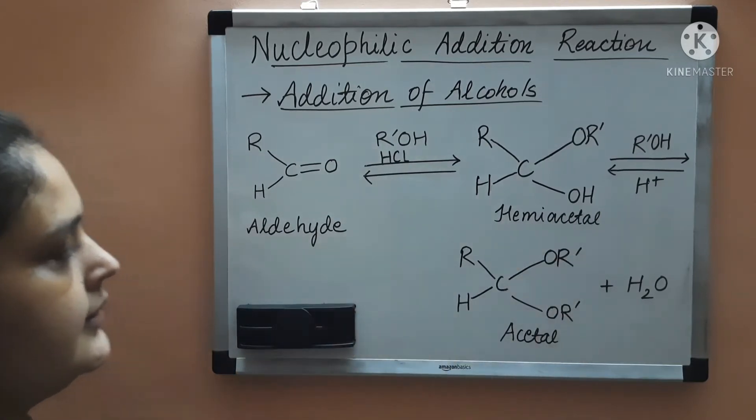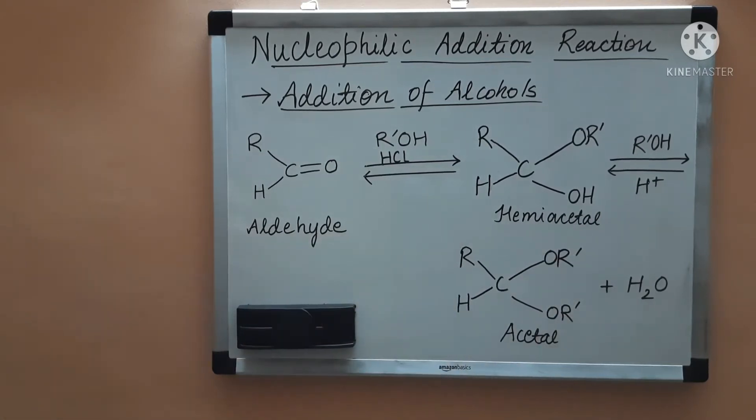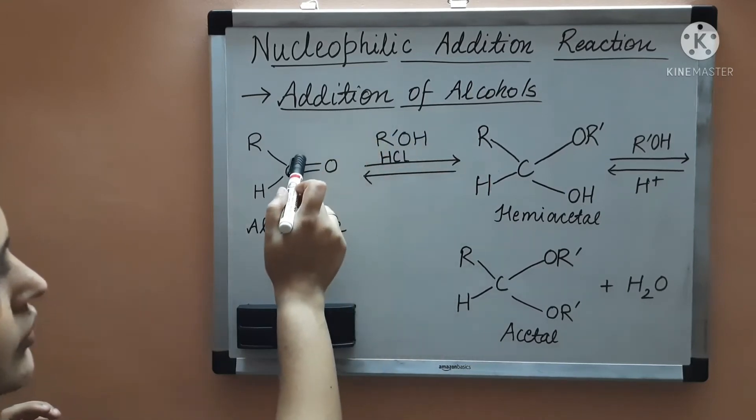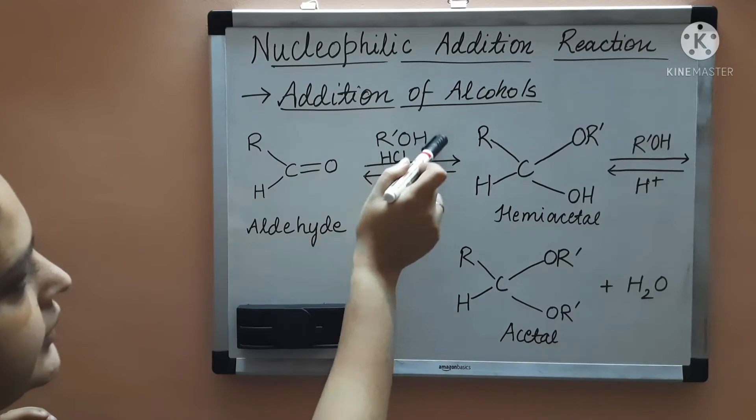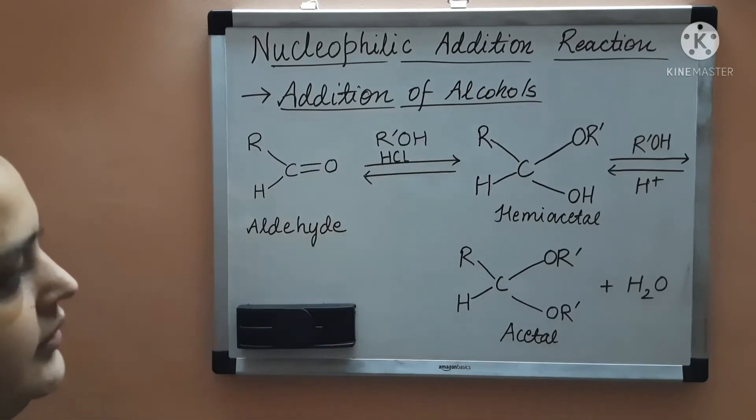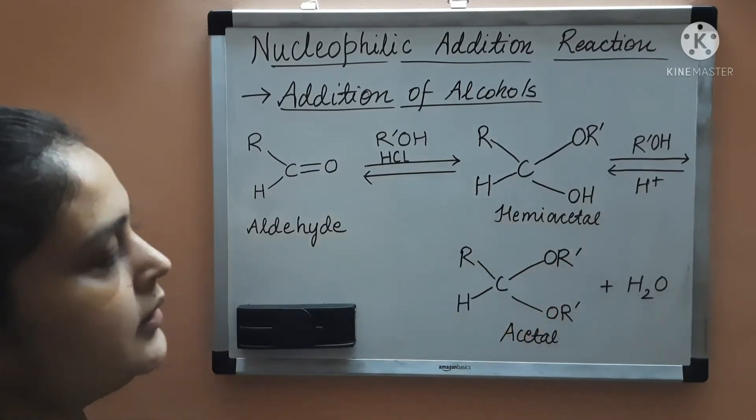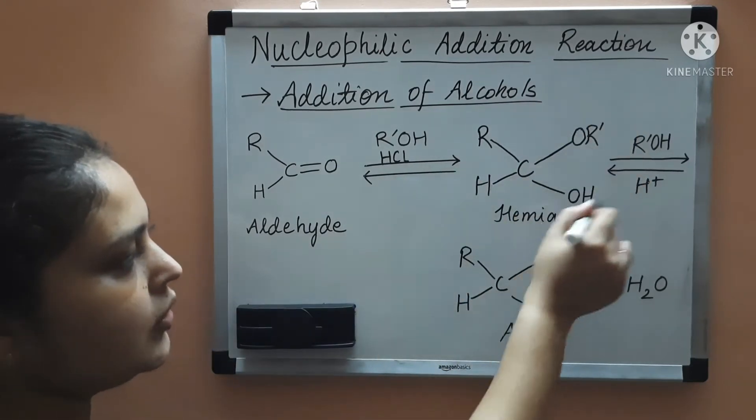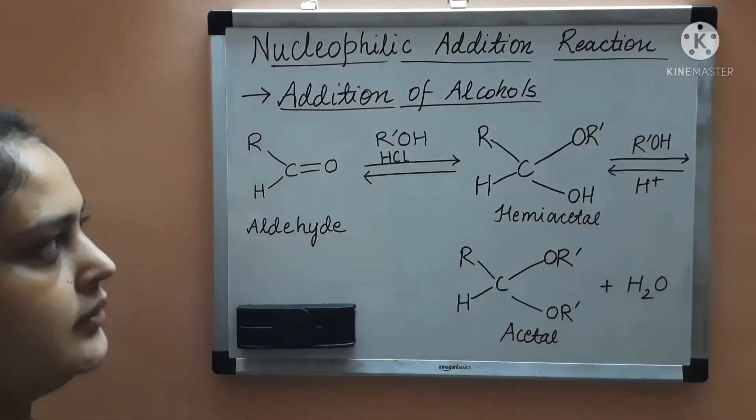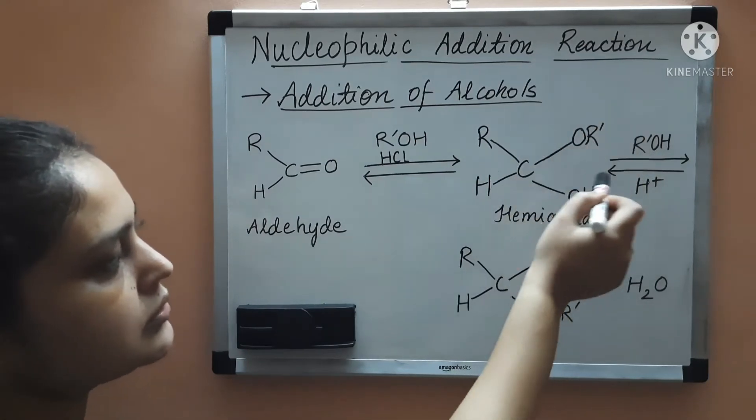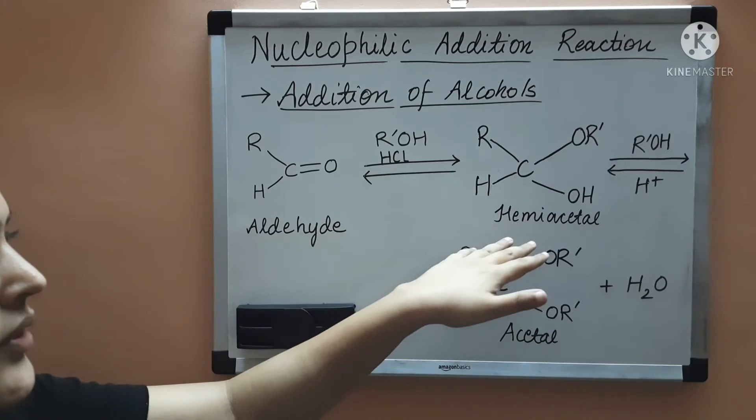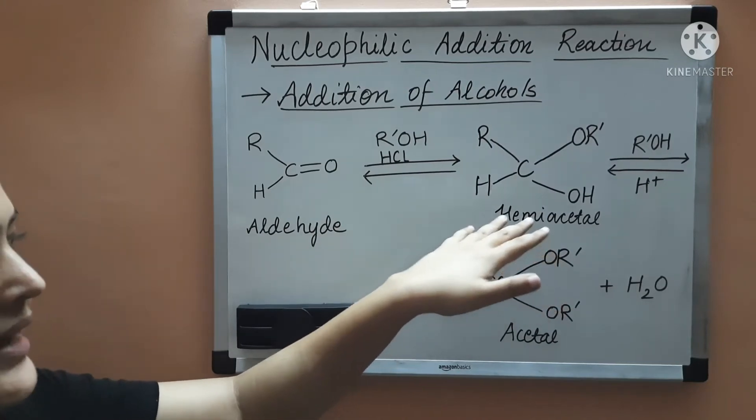You will get hemiacetal. This hemiacetal is formed when the OR' negative is attacking on the carbonyl carbon and the hydrogen atom is attached to the oxygen atom and you are getting this compound. This is an alkoxy alcohol intermediate because you are getting alkoxy also and alcohol also, and the name given to this type of compound is hemiacetal.